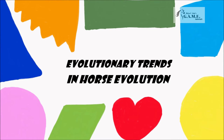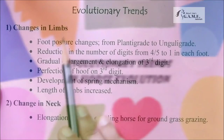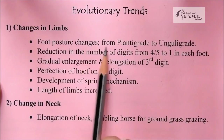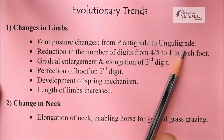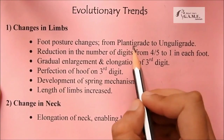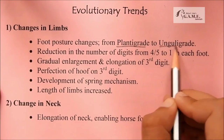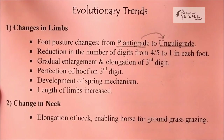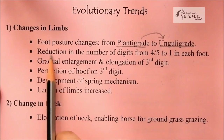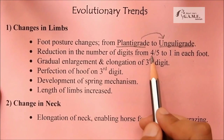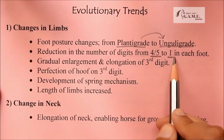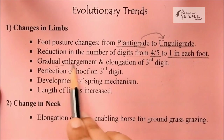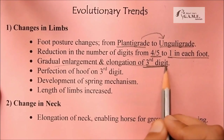First, we have changes in limbs. Foot posture changed from plantigrade to unguligrade. There was also a reduction in the number of digits from four or five to one on each foot, and a gradual enlargement and elongation of the third digit.